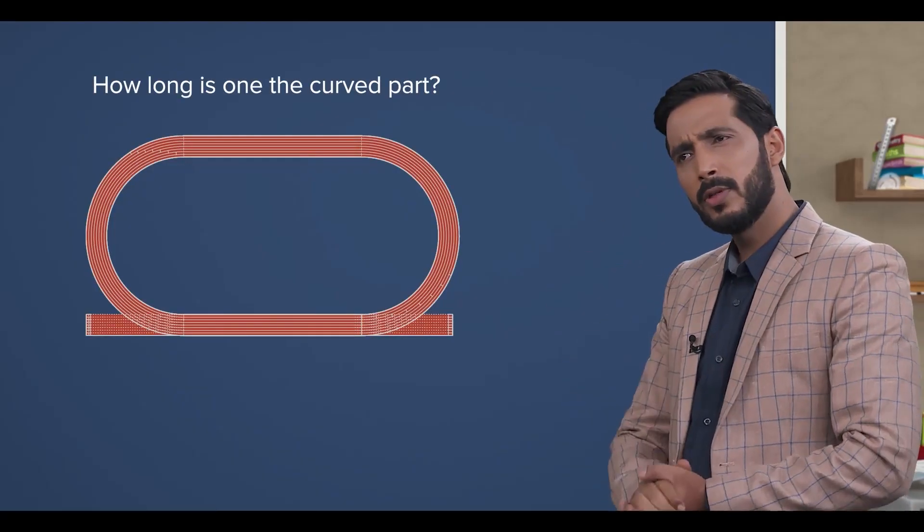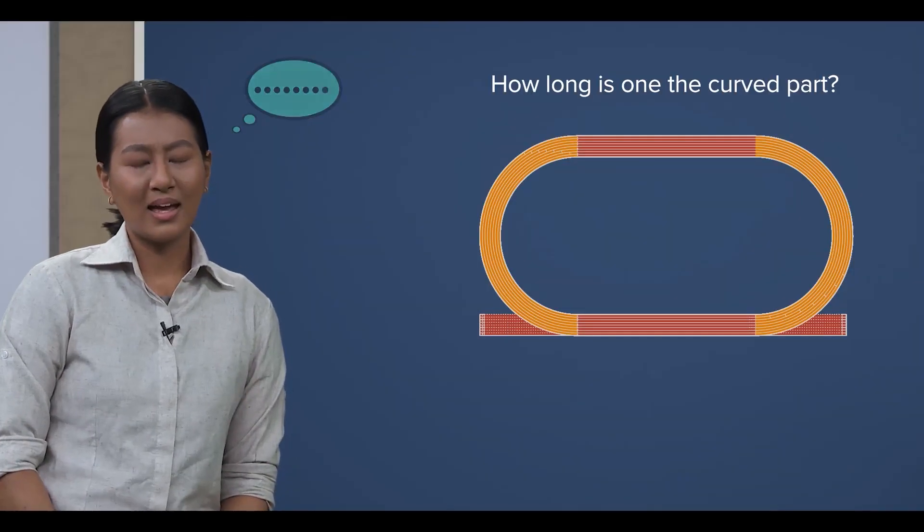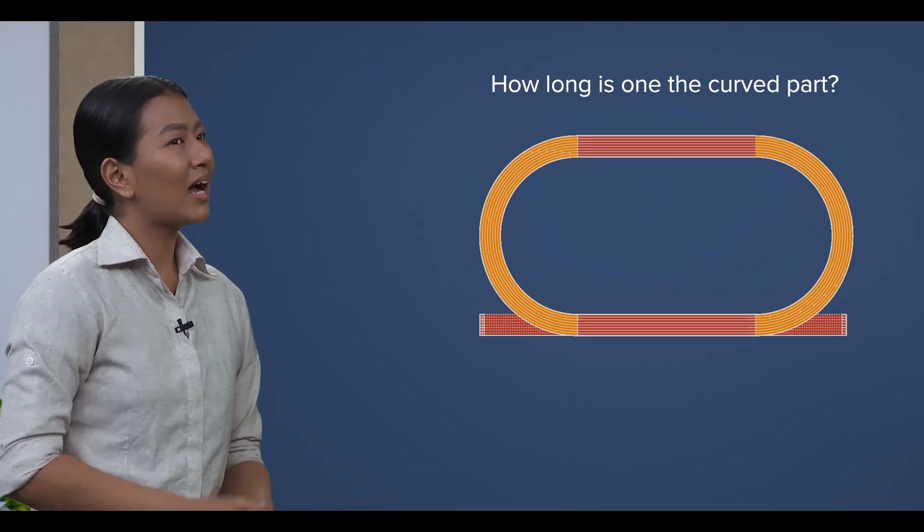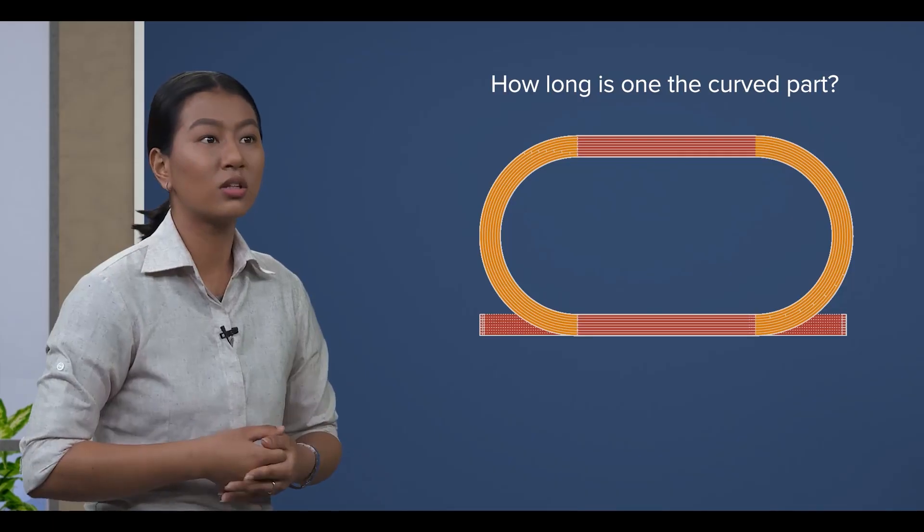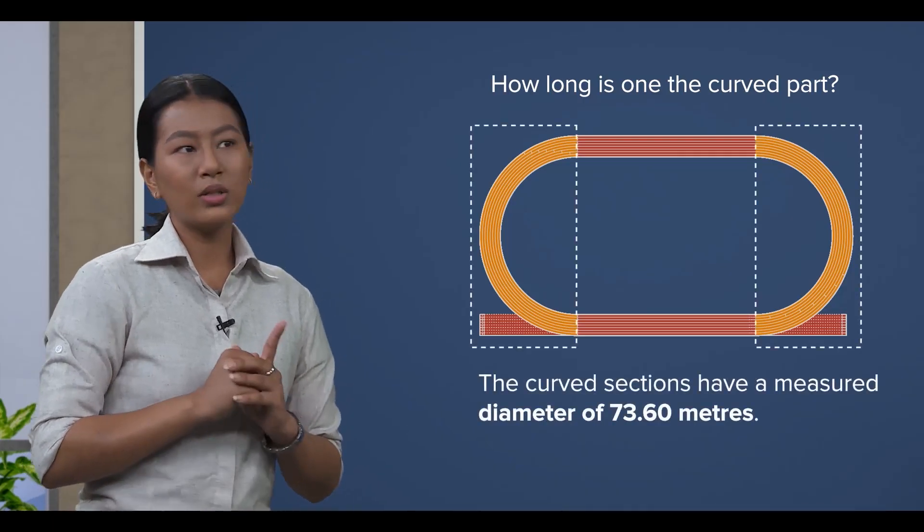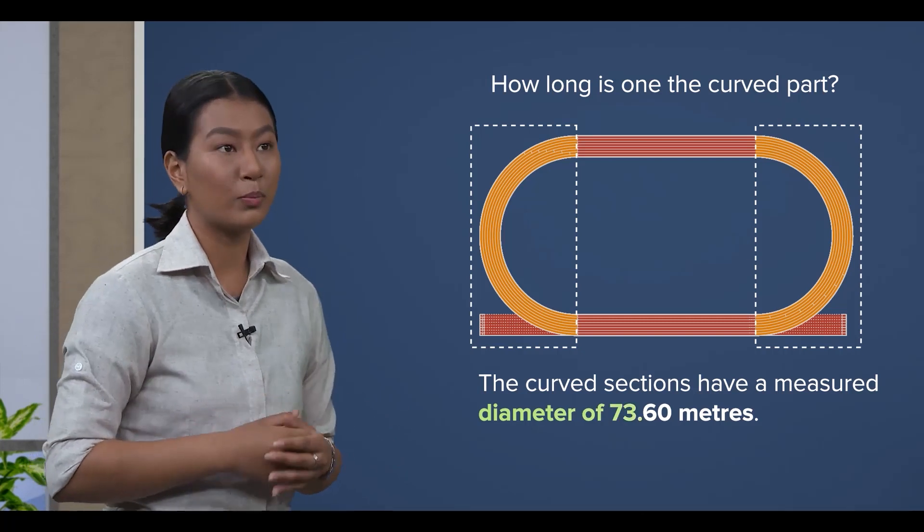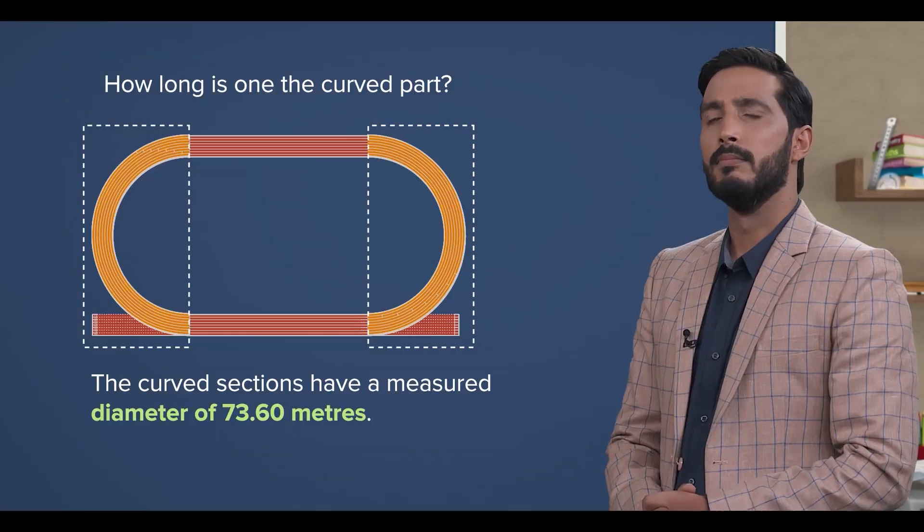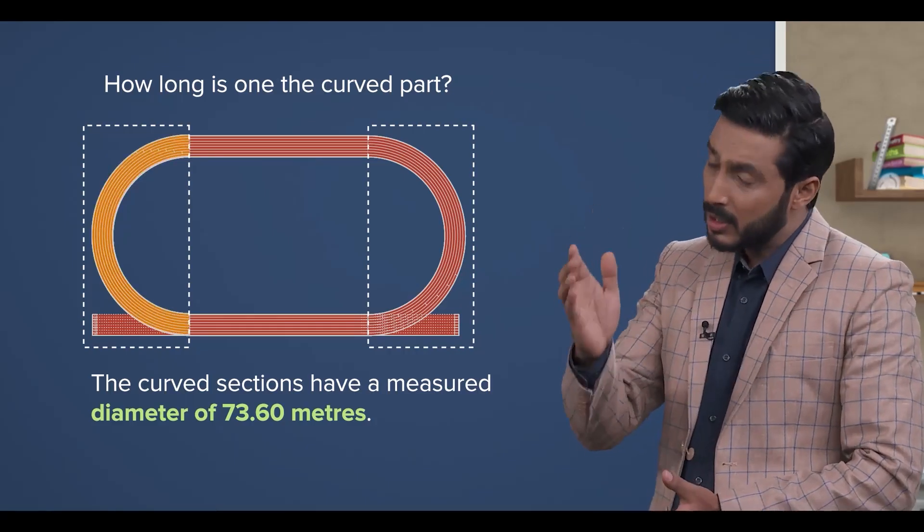By the way, Prashenna, how long do you think the curved part of the track is? Actually, I'm also not sure how long the curved part is. It wasn't mentioned in the documentary. I only know that the curved sections have a diameter of 73.60 meters. Then surely you can calculate the length of one of the curved sections too.